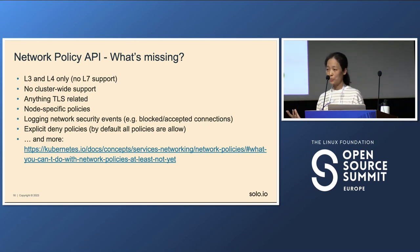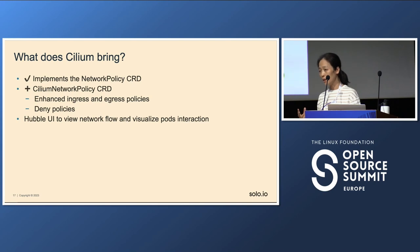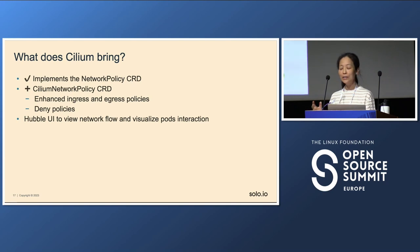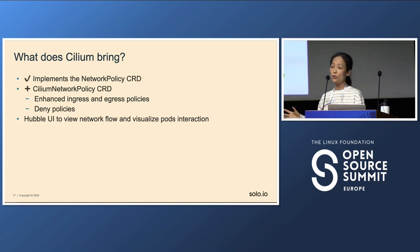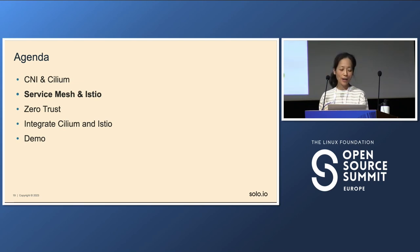One thing interesting about network policy: if you go to the Kubernetes docs and read what's not in network policy, you'll find it's only for layer three and layer four. It doesn't have cluster-wide support, anything TLS-related is not really supported, and it doesn't support deny policies. So what Cilium brings to the table is its own CRD called Cilium Network Policy that provides enhanced ingress and egress policy and also supports deny policy. You can also use observability through Hubble UI to visualize network flow and troubleshoot network problems between your pods.